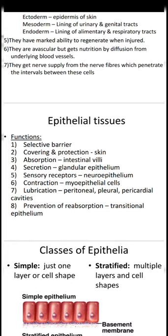Epithelial tissues are selective barriers — they let some materials pass through and some they do not. For example, when the body is hot, skin is a very good example of a tissue that keeps the body cool. This happens via sweating — it releases temperature out of the body but does not let anything sink into the body, except water and some other substances.